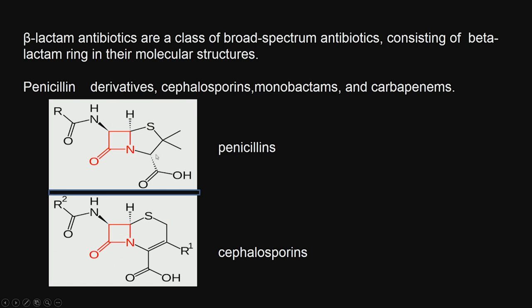Many soldiers before the advent of penicillin used to die because of infection, and penicillin was a biggest boon. They are called beta-lactam antibiotics. This is the beta-lactam ring — a 4-membered cyclic ring with a nitrogen and a ketonic group. Many antibiotics in this class will have this particular ring; we can have different substitutions but the beta-lactam ring is kept intact. This is cephalosporins — you see the beta-lactam ring and different R groups are put in to get large numbers of cephalosporins.